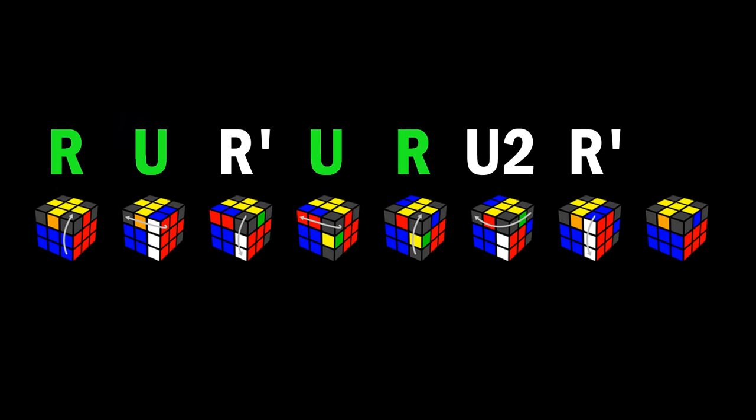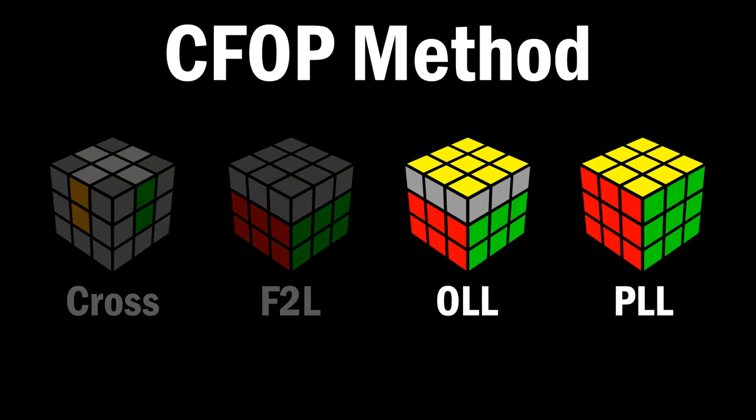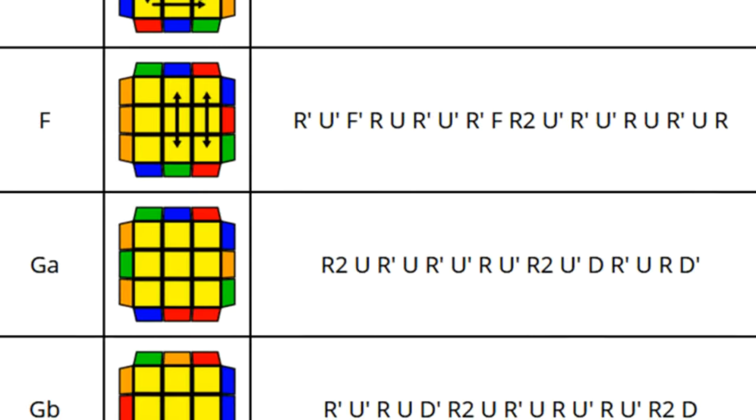Algorithms are written like this, where each letter tells you which face to turn clockwise, or counterclockwise if there's a prime on it, or turn it twice if there's a two. In the CFOP speed-solving method, the last two steps are entirely solved using algorithms.